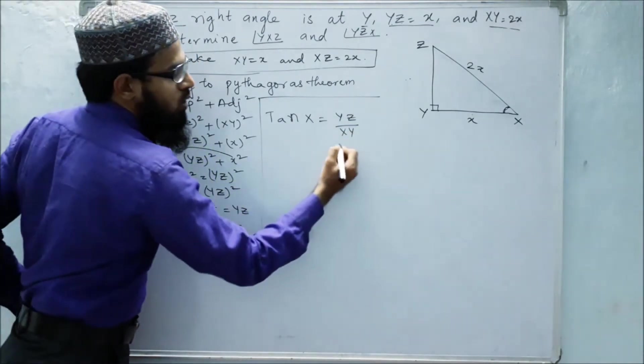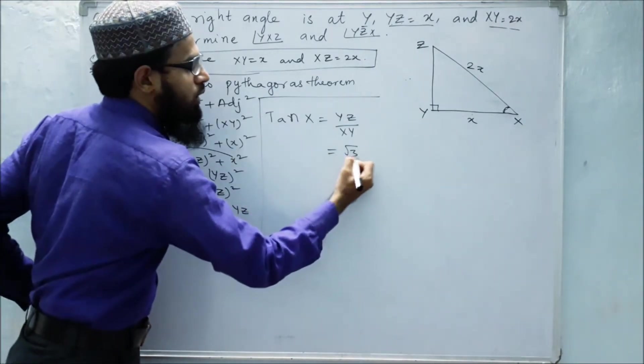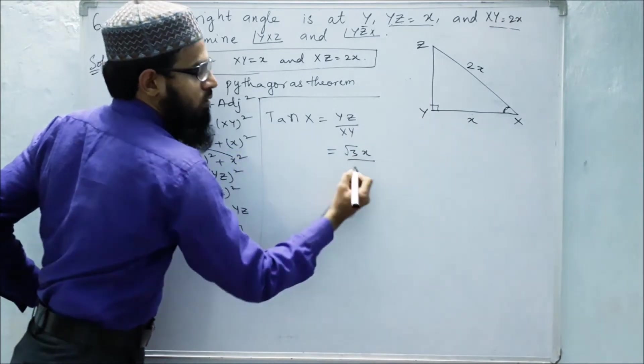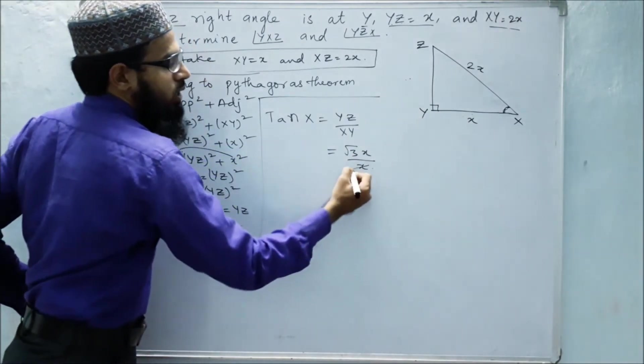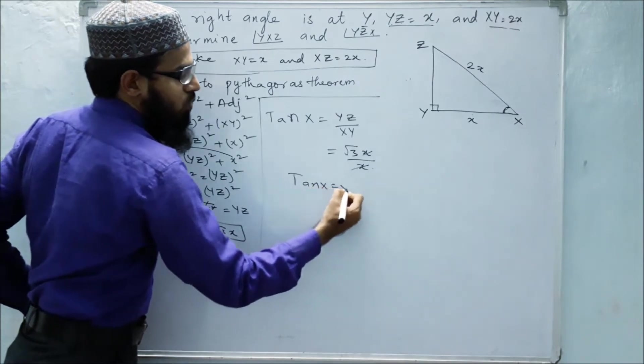Opposite is YZ by adjacent is XY. Next, YZ is root 3x, root 3x by XY is x. So this x and this x get cancelled. So we get tan X equals root 3.